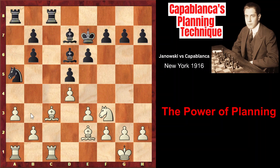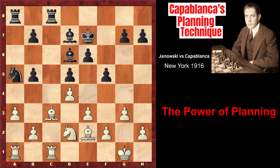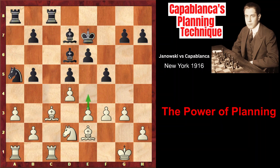Now Nb3 is threatened, that's why Nd2. Capablanca isn't in a hurry, so he plays f5, as there is nothing white can do anyways, because white's position is already quite passive. And by playing f5, he prevents white's possible counter game with e4. g3, b5, and f3 preparing e4. However, it would be better to play bishop captures on a5, preventing black's plan. However, f3. And now Nc4.